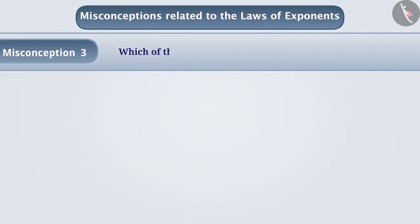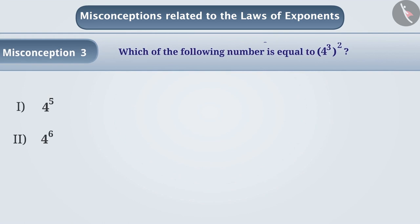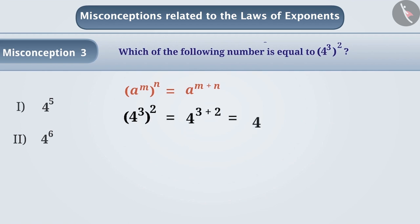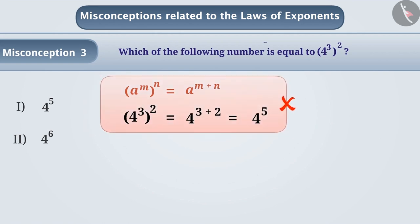Misconception 3. Which of the following numbers is equal to 4 cubed to the power of 2? Some children have the misconception that a to the power of m, the whole to the power n, is equal to a to the power of m plus n. Thus, they write 4 cubed to the power of 2 is equal to 4 to the power of 3 plus 2, which is equal to 4 to the power of 5. But this is a misunderstanding.